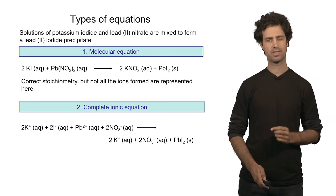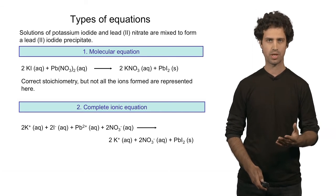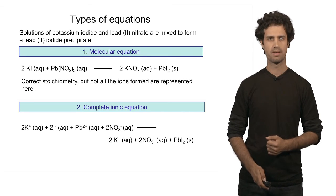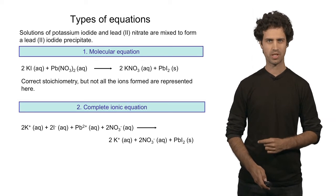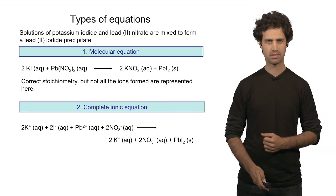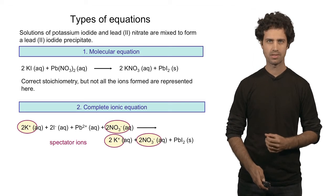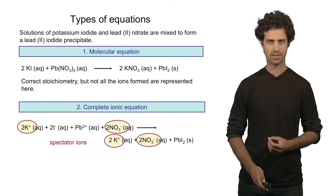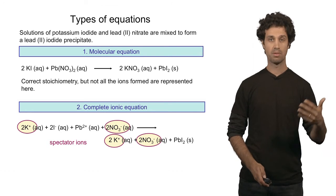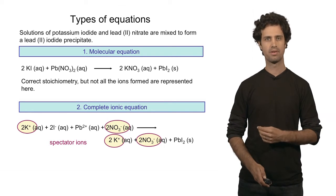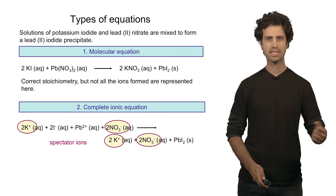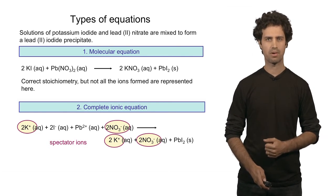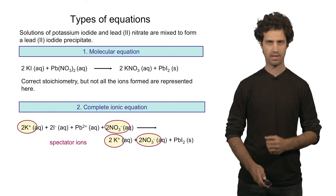Note that on the left-hand side and the right-hand side of this equation we find the potassium ion. We also find the nitrate ion on both sides of the equation. These are so-called spectator ions — they are present in the solution both before and after and do not partake in the actual reaction. We can leave these spectator ions out and arrive at the third way of writing this chemical equation.